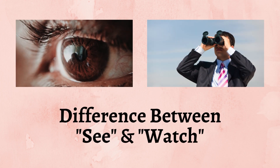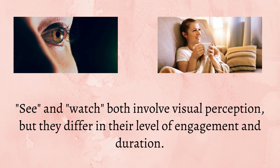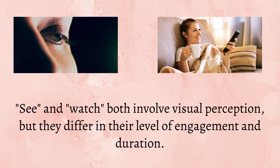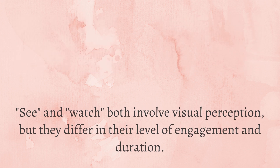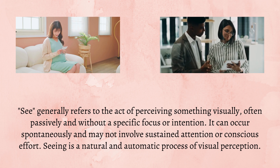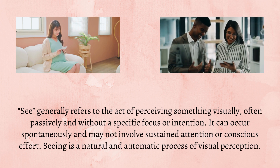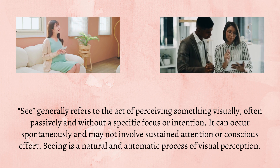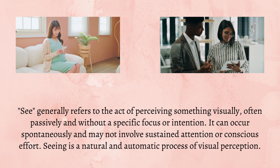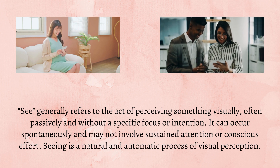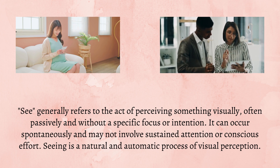Difference between see and watch. See and watch both involve visual perception, but they differ in their level of engagement and duration. See generally refers to the act of perceiving something visually, often passively and without a specific focus or intention. It can occur spontaneously and may not involve sustained attention or conscious effort. Seeing is a natural and automatic process of visual perception.